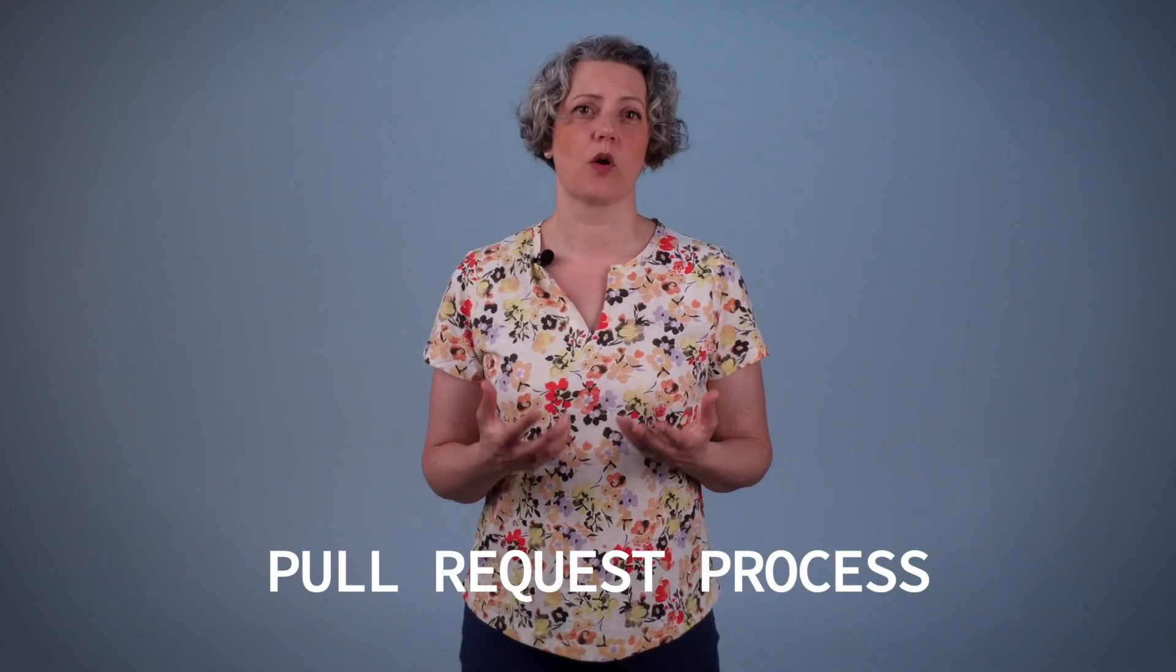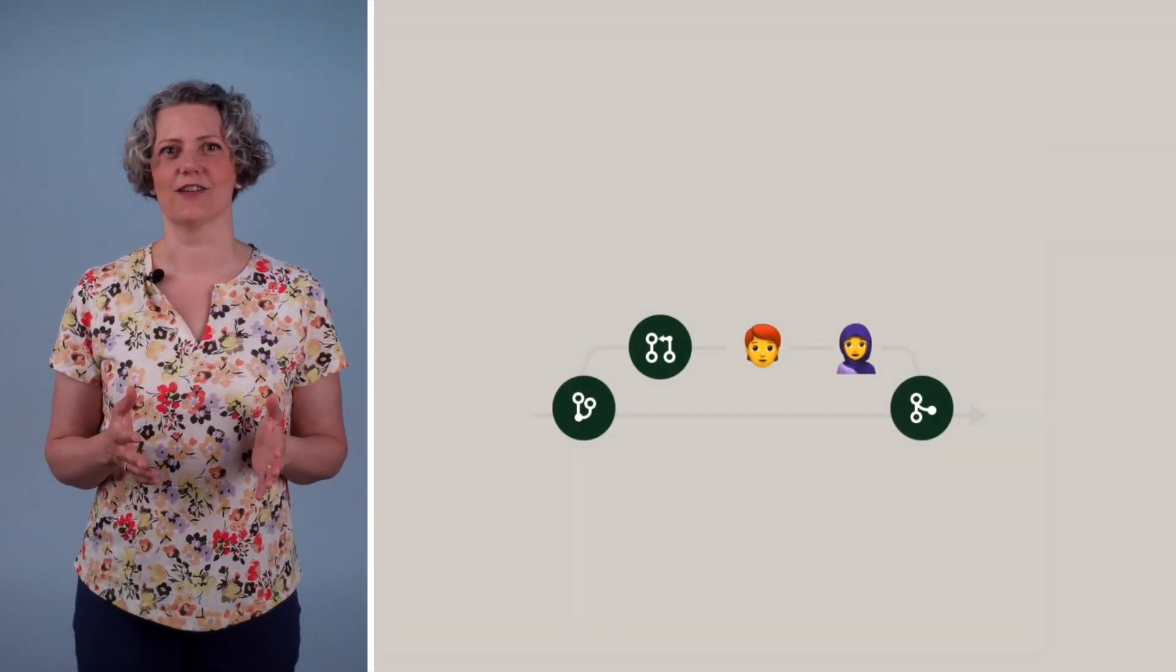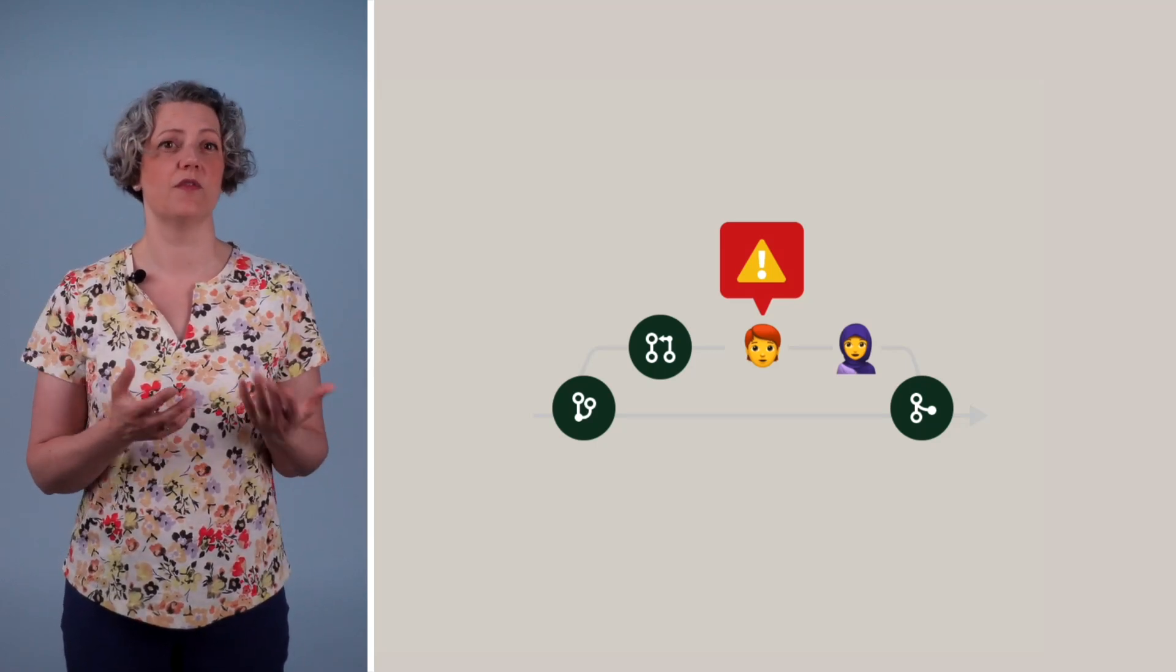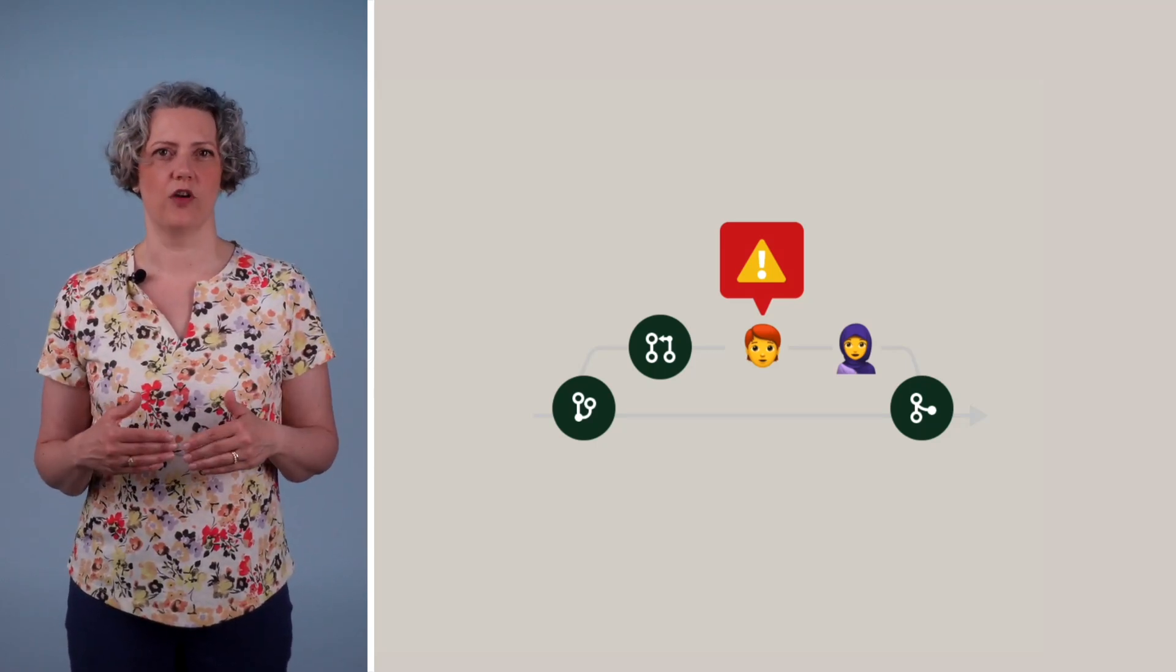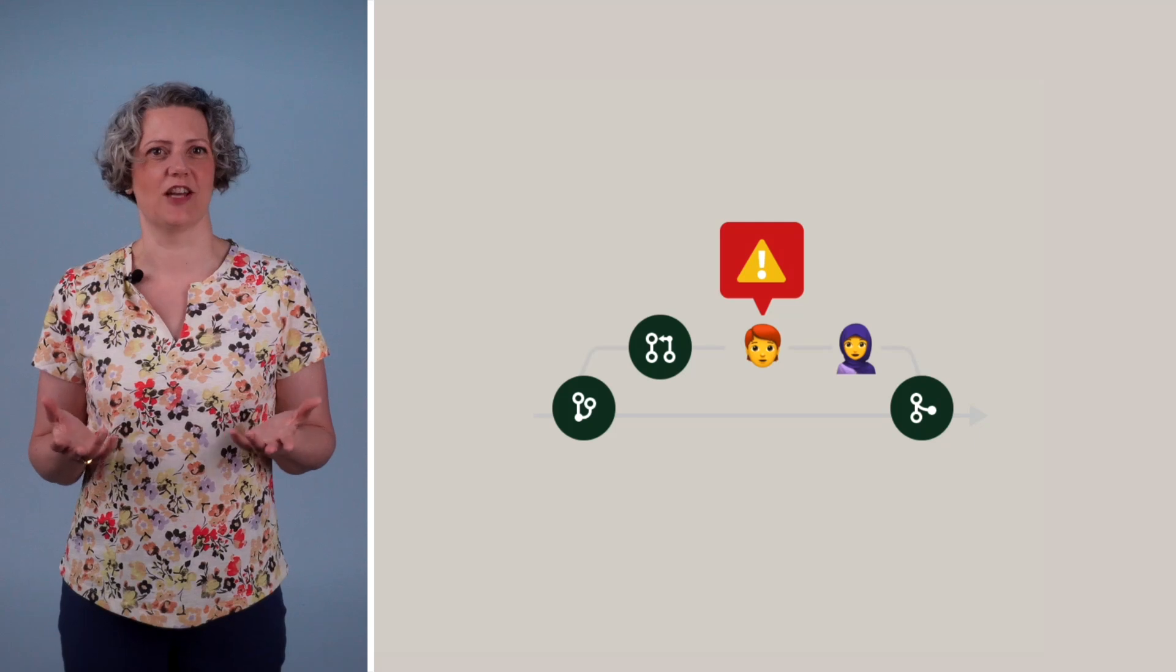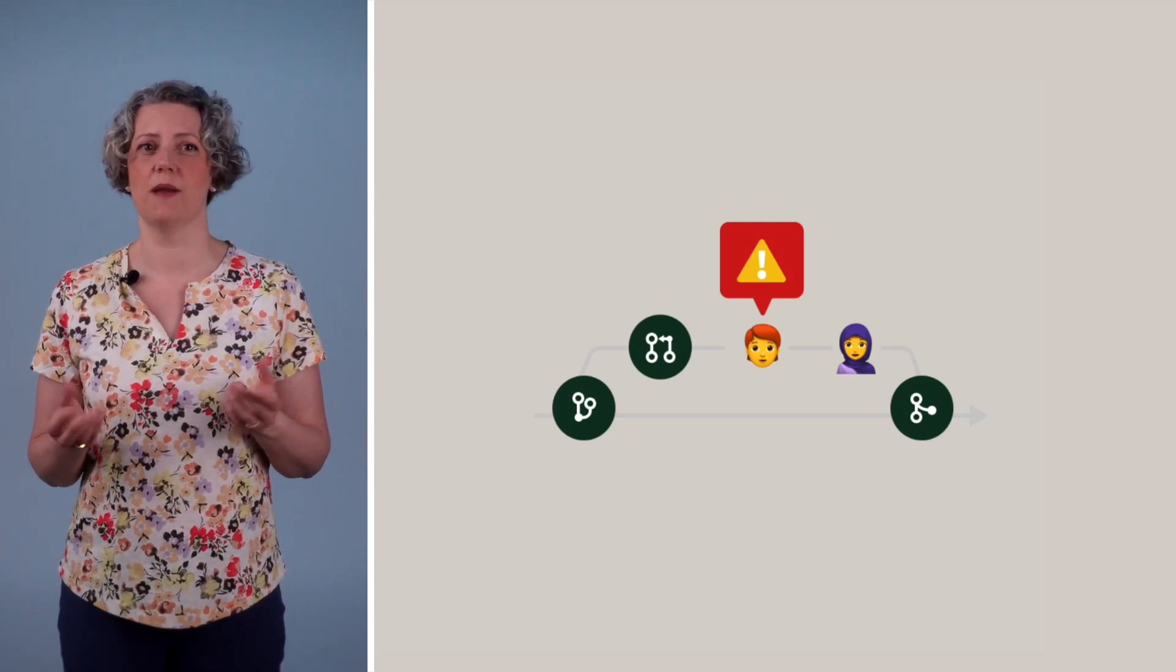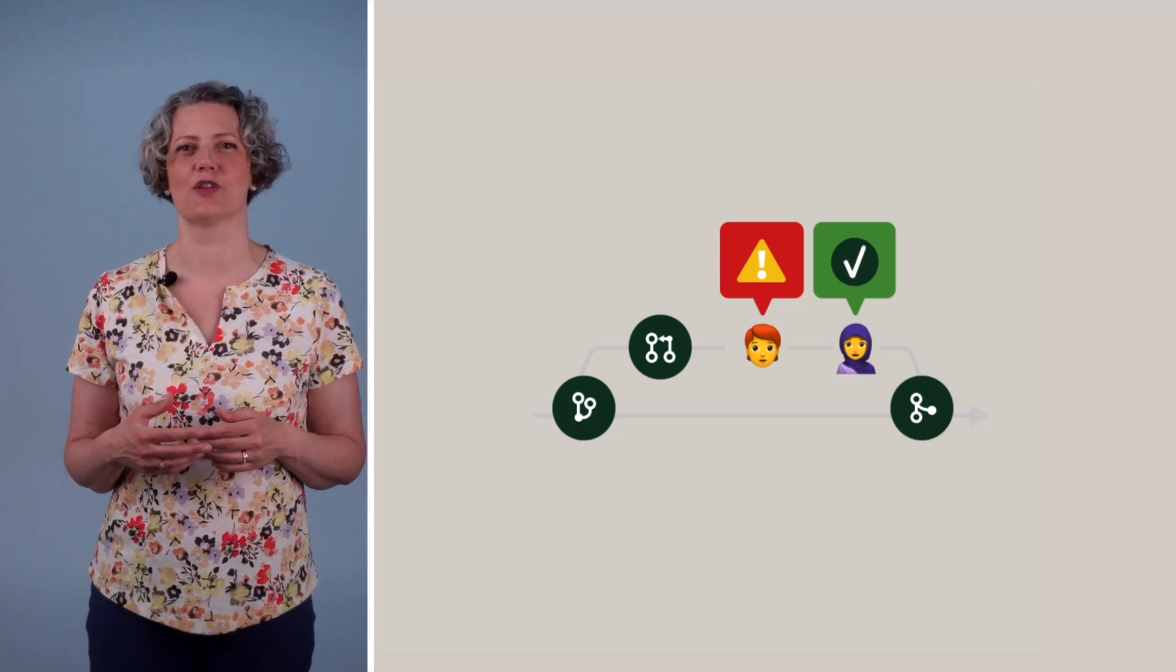Usually these days code review happens during a pull request process. A developer on the team finishes their coding task and creates a pull request. So another team member will be prompted to review it. They read through the code changes and add their comments and suggestions. And then the original developer might need to make some changes or maybe the code will get accepted into the main branch straight away.